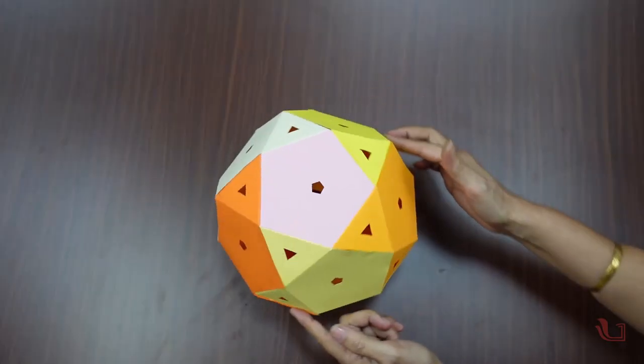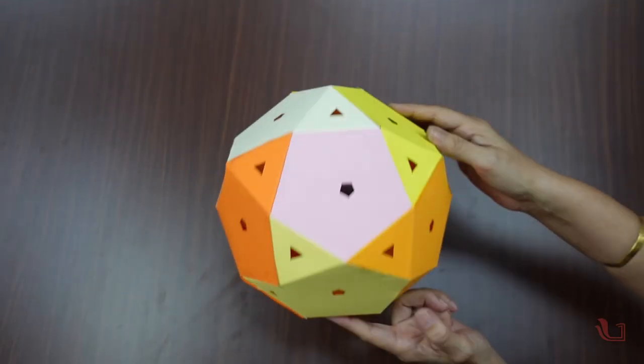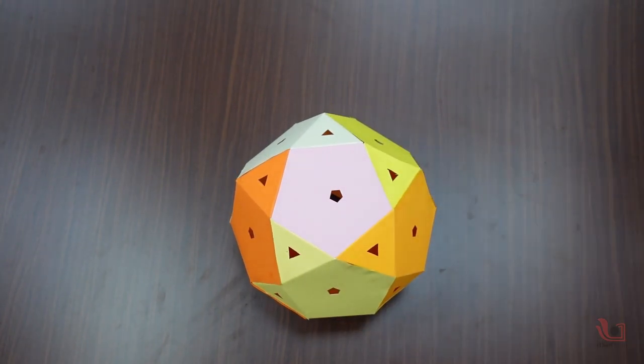Thus, when all the flaps are joined to the side flaps, we see the icosidodecahedron formed.